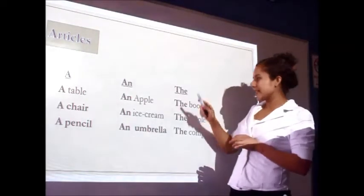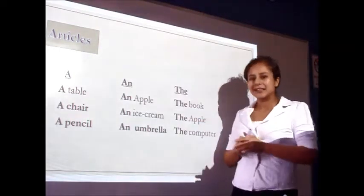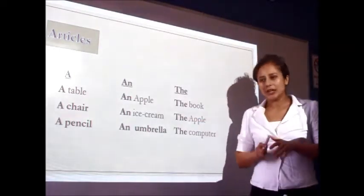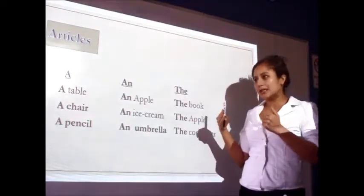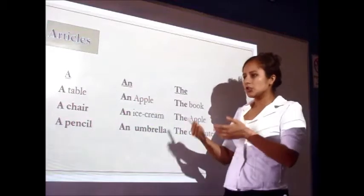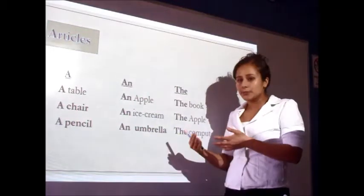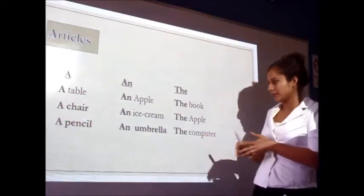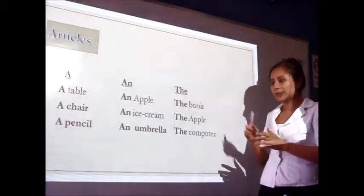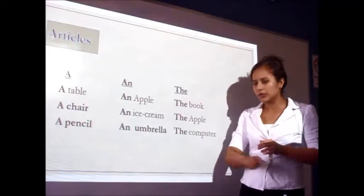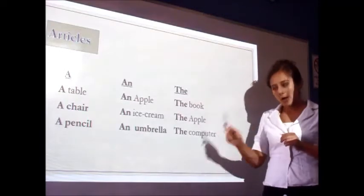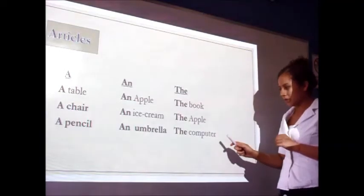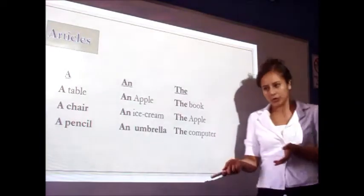The other article is 'the.' We use 'the' to mention and identify a specific thing. For example: the book, the apple, the computer.